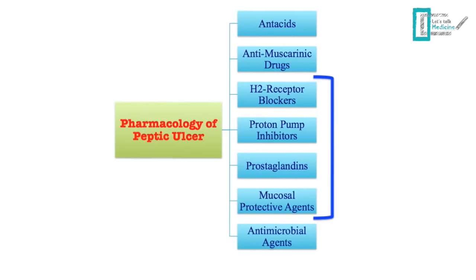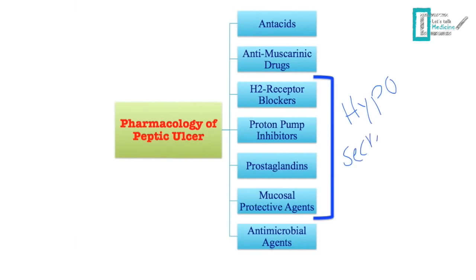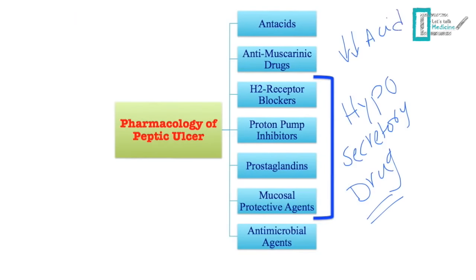Now we will go into the pharmacology of peptic ulcer. The drug classes used are antacids, anti-muscarinic drugs, H2 blockers, proton pump inhibitors, prostaglandins, mucosal protective agents, and antimicrobial agents. From the H2 blockers up to the mucosal protective agents, these are considered hyposecretary drugs because they cause a remarkable decrease in acid secretion, helping in the healing of the peptic ulcer.